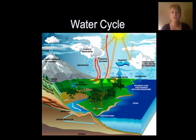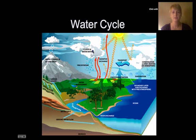Now we're going to talk about several different cycles in the environment. The first one is the water cycle, which shows that water cycles continuously throughout our environment. What this is showing is the water comes down from the atmosphere — we have ice and snow and rain.